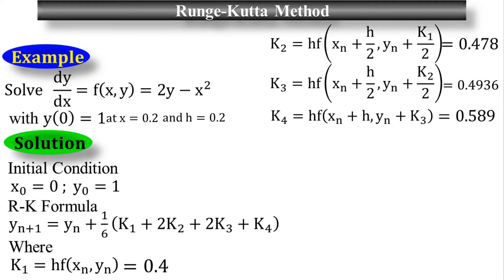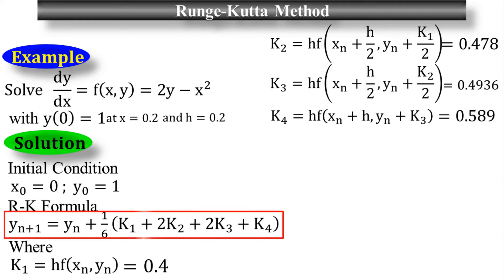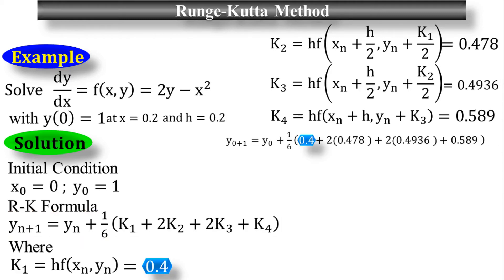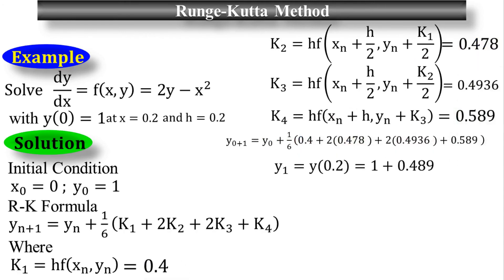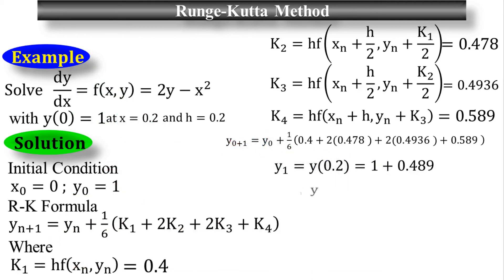Now substituting all approximate values k₁, k₂, k₃, and k₄ into the Runge-Kutta formula: k₁ equals 0.4, k₂ equals 0.478, k₃ equals 0.4936, and k₄ equals 0.589. This gives y₁ equals y(0.2) equals 1 plus 0.489, which equals 1.489. This is the final approximate value for y at x equals 0.2.